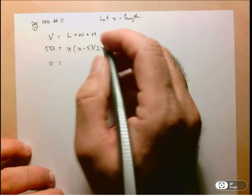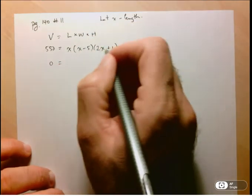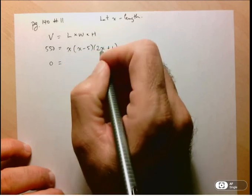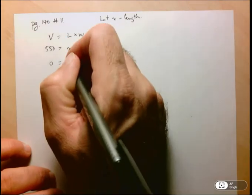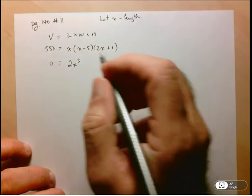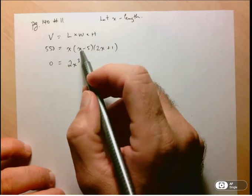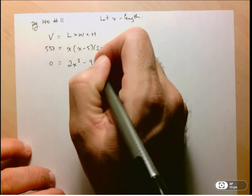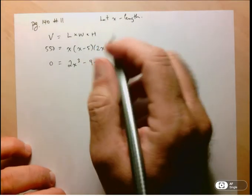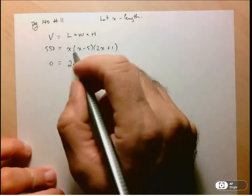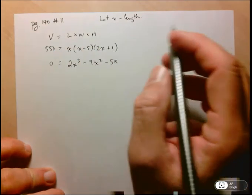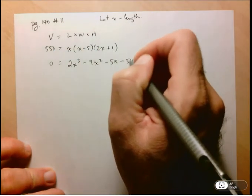So here, let's multiply this out. I'm going to multiply these two first, and then multiply by x. So x times 2x, 2x squared, but then I'm multiplying by another x, so 2x cubed. Then here I've got 1x minus 10x, so minus 9x times another x, so minus 9x squared. And then negative 5 times 1, negative 5 times x, so minus 5x, and then of course I'm bringing this 550 to the right-hand side, minus 550.